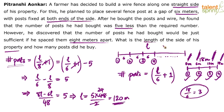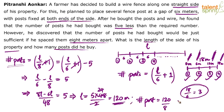He also asked: how many posts did he buy? Simply substitute into the formula. Number of posts is L by 8 plus 1. With L equal to 120 meters: 120 divided by 8 is 15, plus 1 is 16. So he bought 16 posts, and the length of the property is 120 meters.